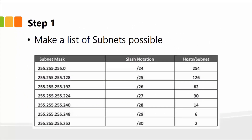Step one: make a list of subnets possible. The given subnet mask starting from 255.255.255.0, with the notation /24, supports 254 hosts. Similarly, 255.255.255.128 — borrowing one bit — gives us /25 with 126 possible hosts on that subnet. We continue borrowing one bit at a time, going from /24 to /25 to /26, /27, and so on. That's the first step — make a list of subnets possible.